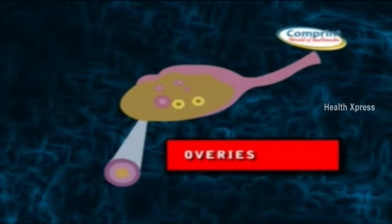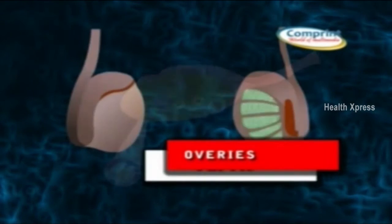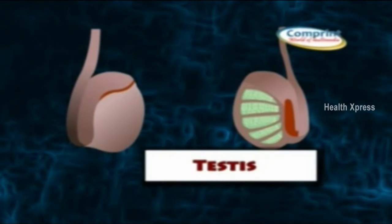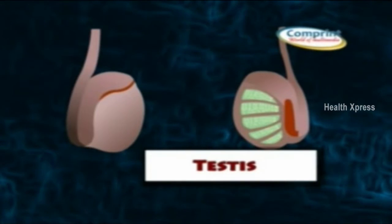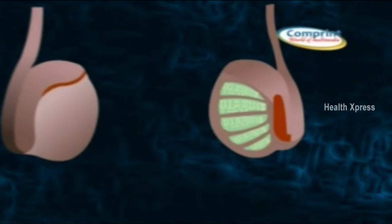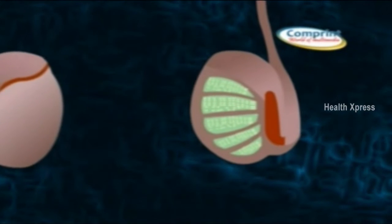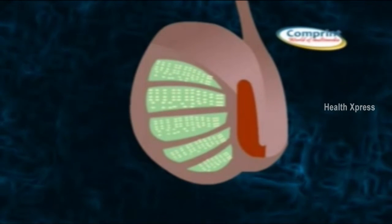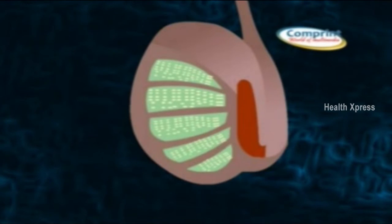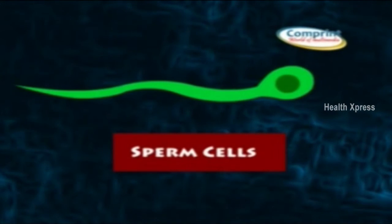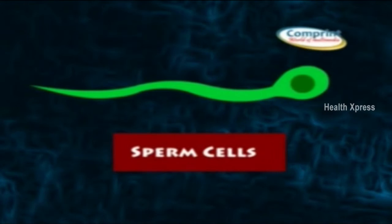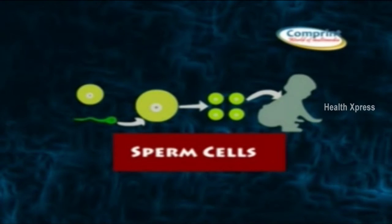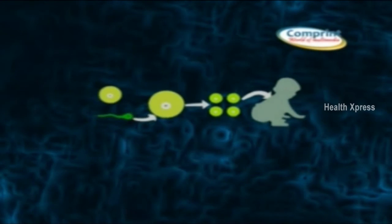The reproductive system transports sperm cells, that is gametes, and nurtures the developing offspring. The reproductive system is divided into two parts. In the male reproductive system, testes produce sperm cells and at the same time store the cells.